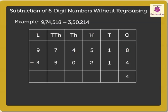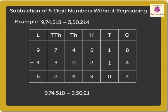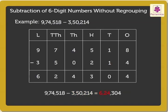Next, 1 minus 1 gives 0. Further, 5 minus 2 is equal to 3. Finally, 9 minus 3 is equal to 6. Hence, the difference of 9,74,518 and 3,50,214 is 6,24,304.